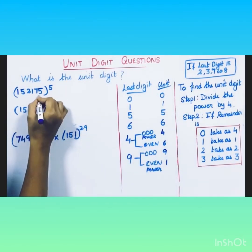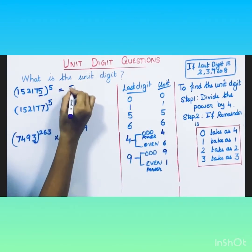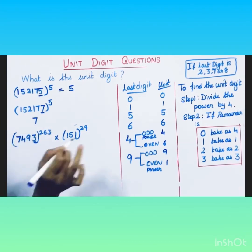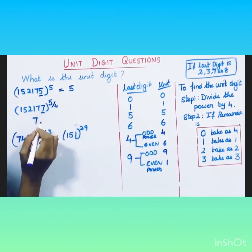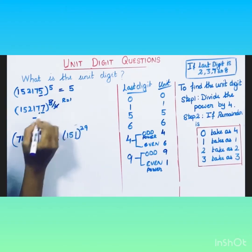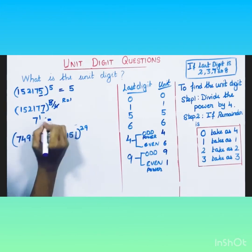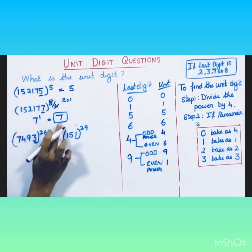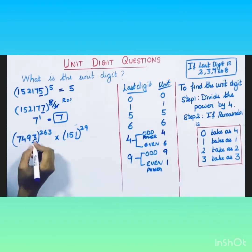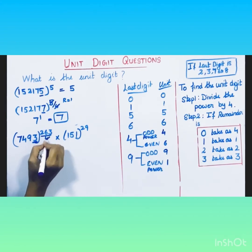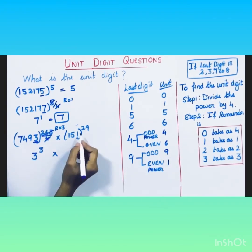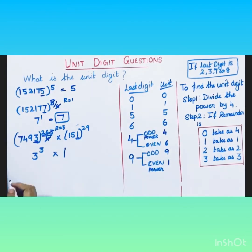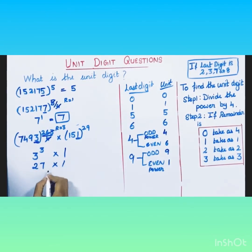For the final example: last digit is 5 → unit digit 5; last digit is 7, take the power and divide by 4 — remainder is 1, so 7^1 = 7, unit digit 7; last digit is 3, take the power and divide by 4 — remainder is 3, so 3^3 = 27, unit digit 7; last digit is 1 → unit digit 1. Multiply: 5 × 7 × 7 × 1, unit digit of the product is 7.